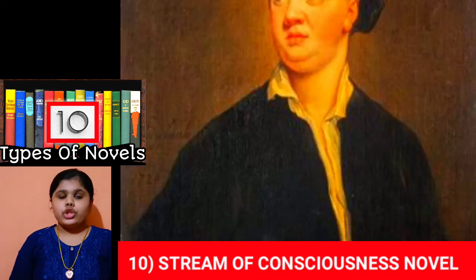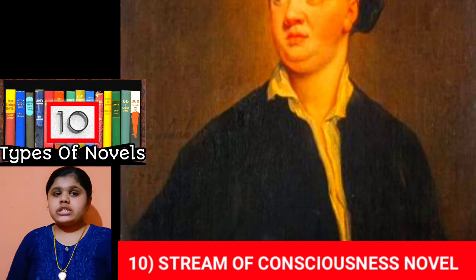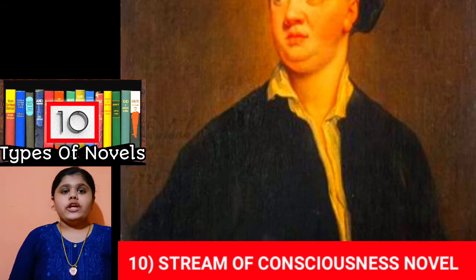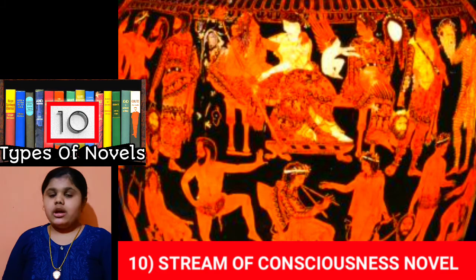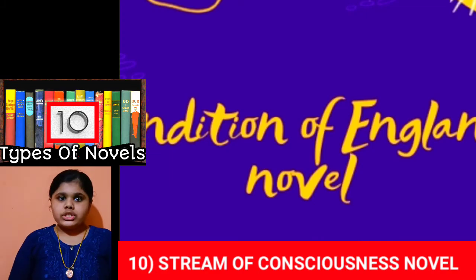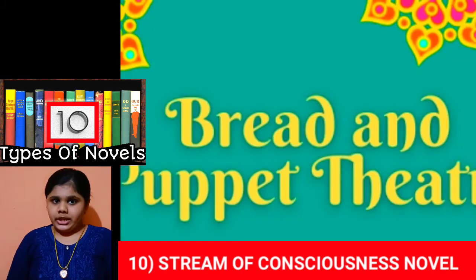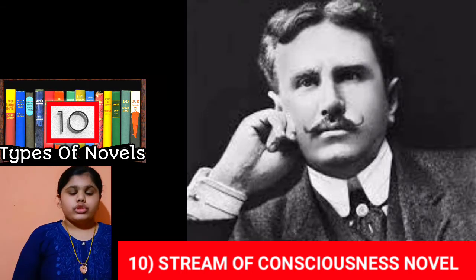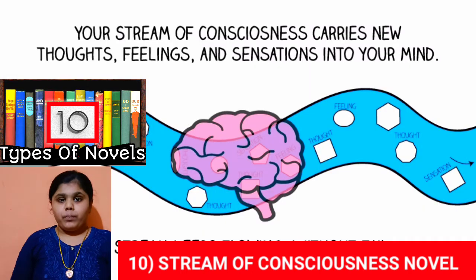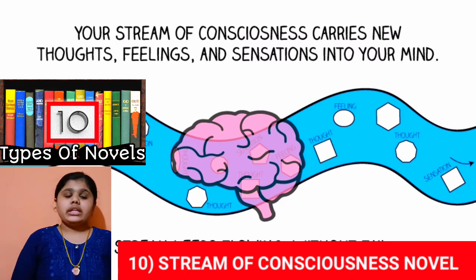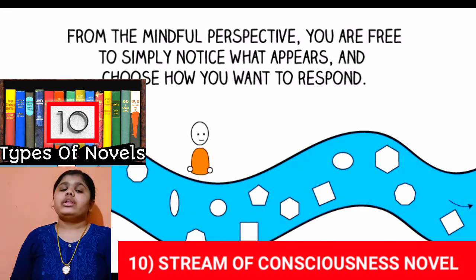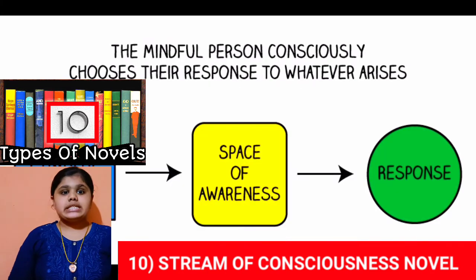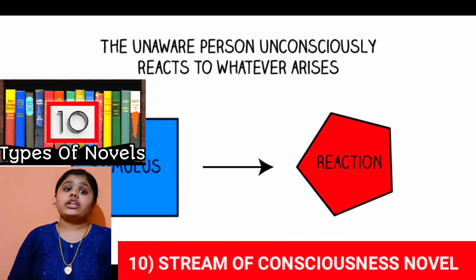The stream of consciousness novel is a phrase coined by William James in his Principles of Psychology in 1890. It means the flow of thoughts. Incidents in the plot are presented in the sequence of their occurrence, and the novel narrates them as they enter the mind of the character.